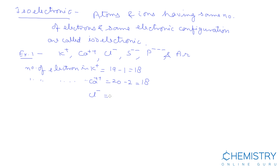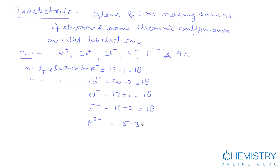Number of electrons in Cl⁻: atomic number of Cl is 17, plus 1 due to the negative charge, equals 18. Number of electrons in S²⁻: atomic number of S is 16, plus 2 due to the 2 negative charge, equals 18. Number of electrons in P³⁻: atomic number of P is 15, plus 3 due to the 3 negative charge, equals 18.